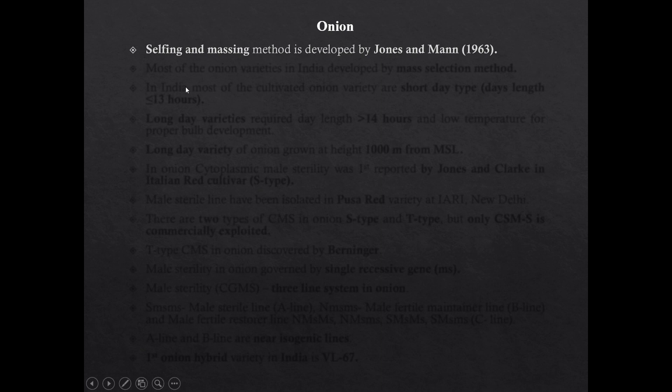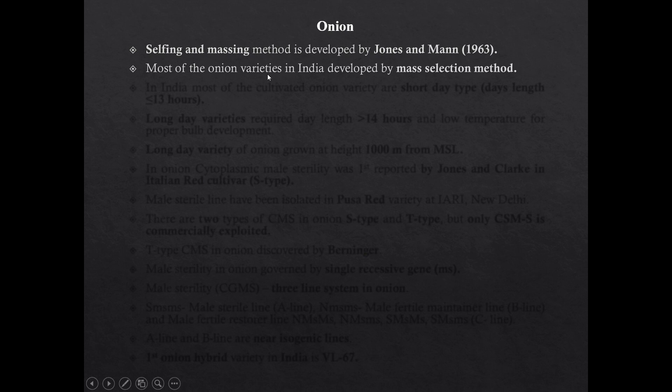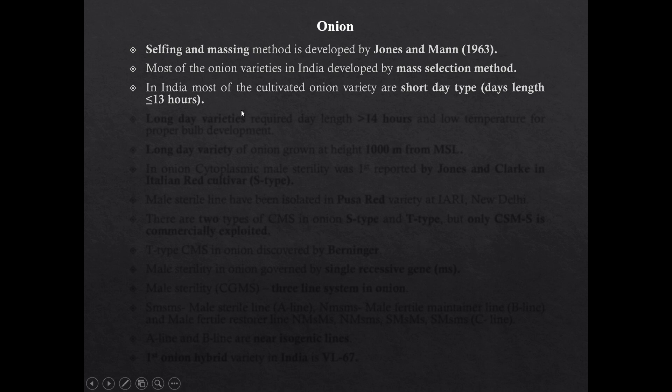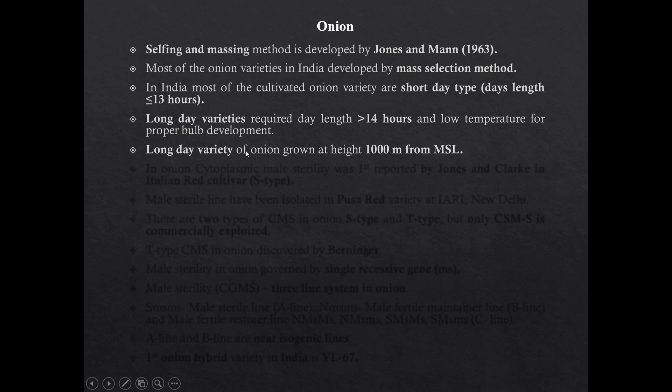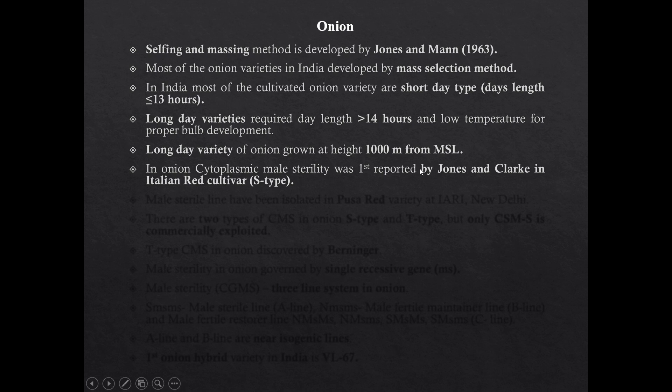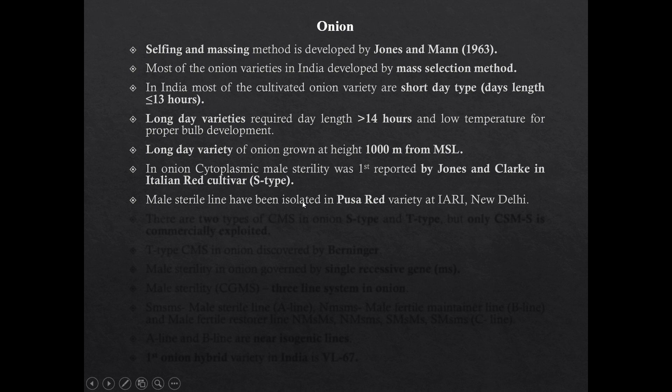Onion shows inbreeding depression on selfing. Selfing and massing method of breeding in onion was developed by Jones and Emsweller. Most of the onion varieties developed in India are by mass selection method. In India, most of the cultivated onion varieties are short-day type. Long-day varieties of onion require more than 14 hours of day length and low temperature for bulb development. Long-day varieties of onion are grown at a height of 1000 meters from mean sea level. Cytoplasmic male sterility in onion was first recorded by Jones and Clarke in cultivar Italian Red. Male sterile lines have been isolated in Pusa Red variety of onion at IARI.